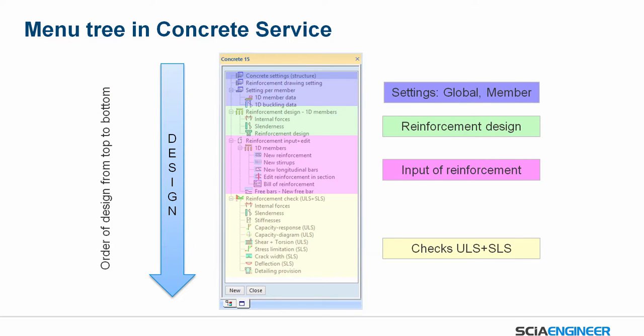There is a new structured menu. Here you can see the menu tree in the concrete surface with a nice order of design from top to bottom. In purple you can see the global and the member settings. Next you can do the reinforcement design. The third step is the input of real reinforcement, and at the end you can do the checks.